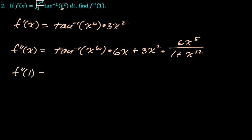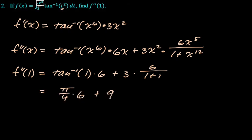Then we got to plug in 1. So f double prime of 1, arc tan of 1 times 6 plus 3 times 6 over 1 plus 1. So that's 6 arc tan of 1. The arc tan of 1 is pi over 4. So 6 times pi over 4 plus 18 over 2, which is 9. So we get this, and then ultimately we get 3 pi over 2 plus 9.